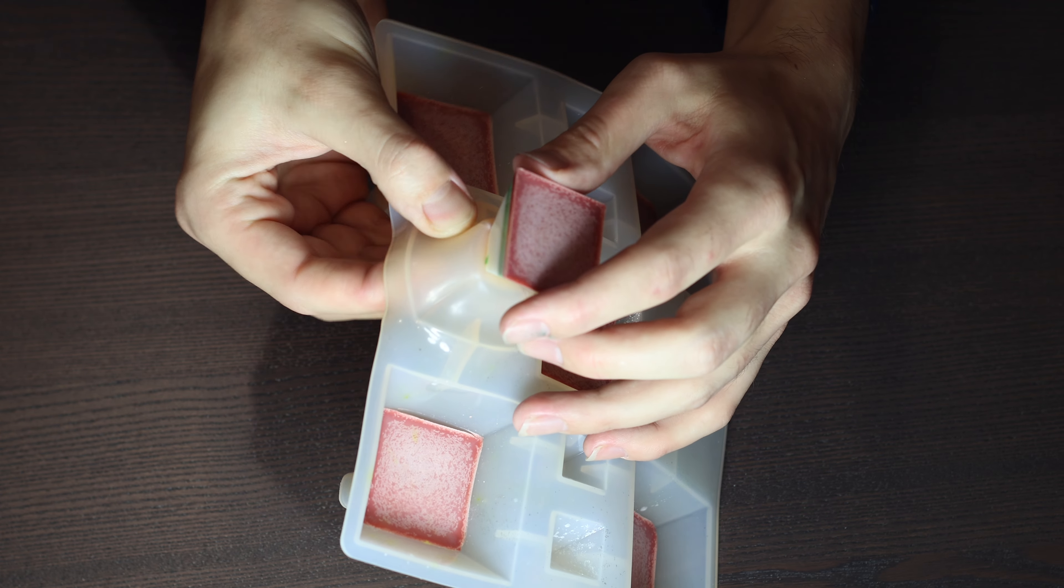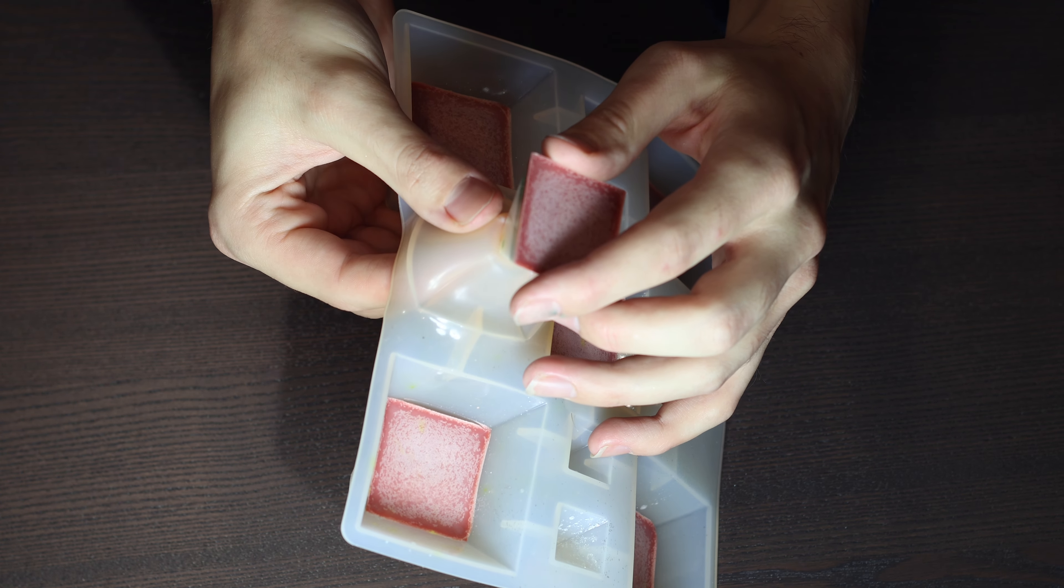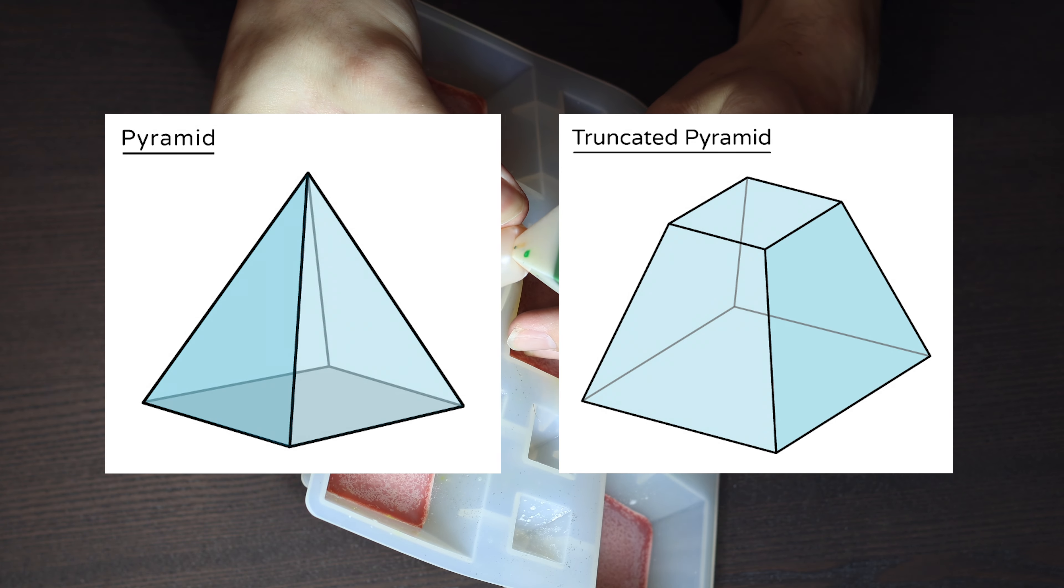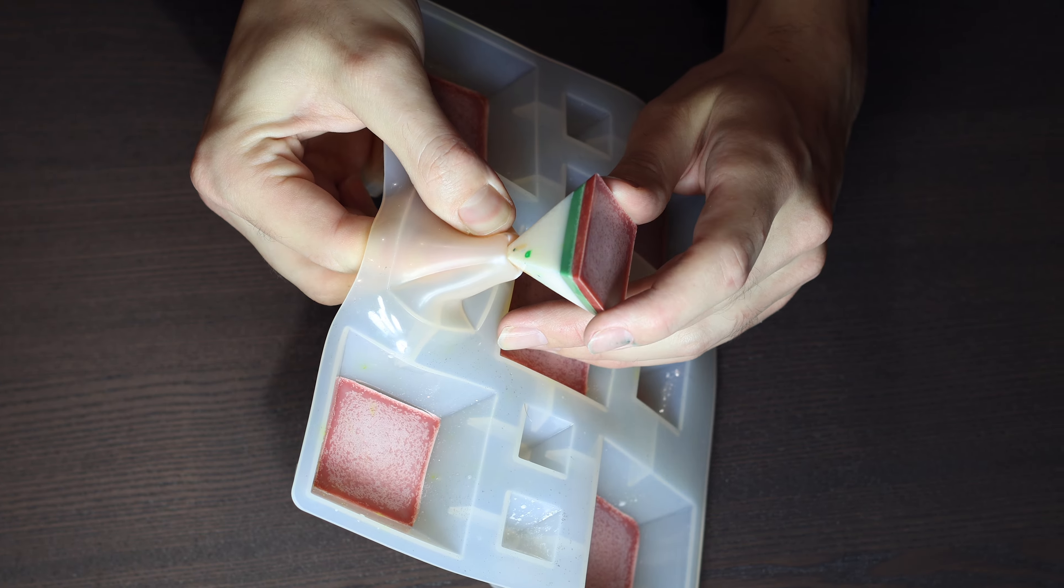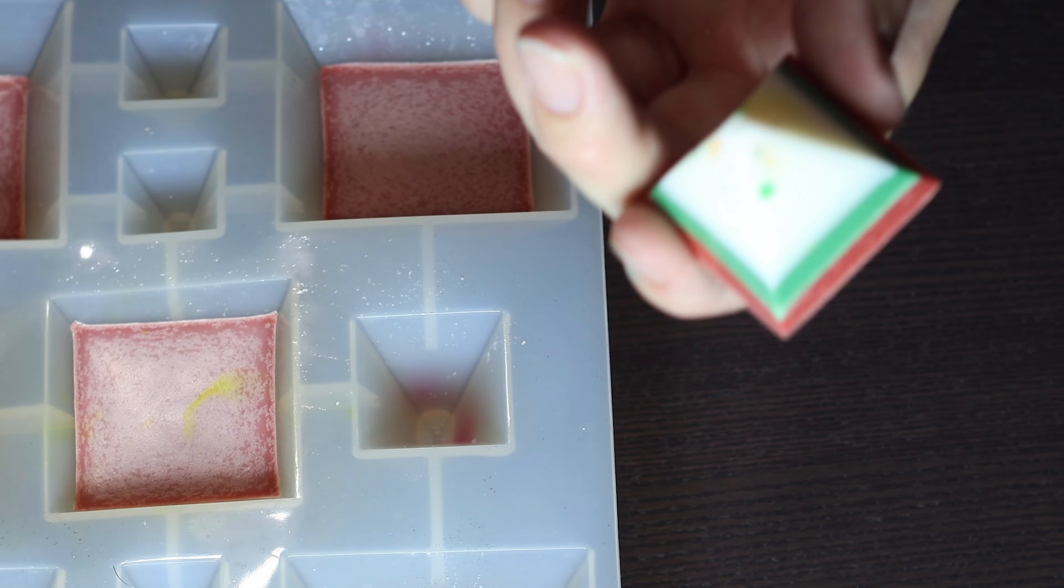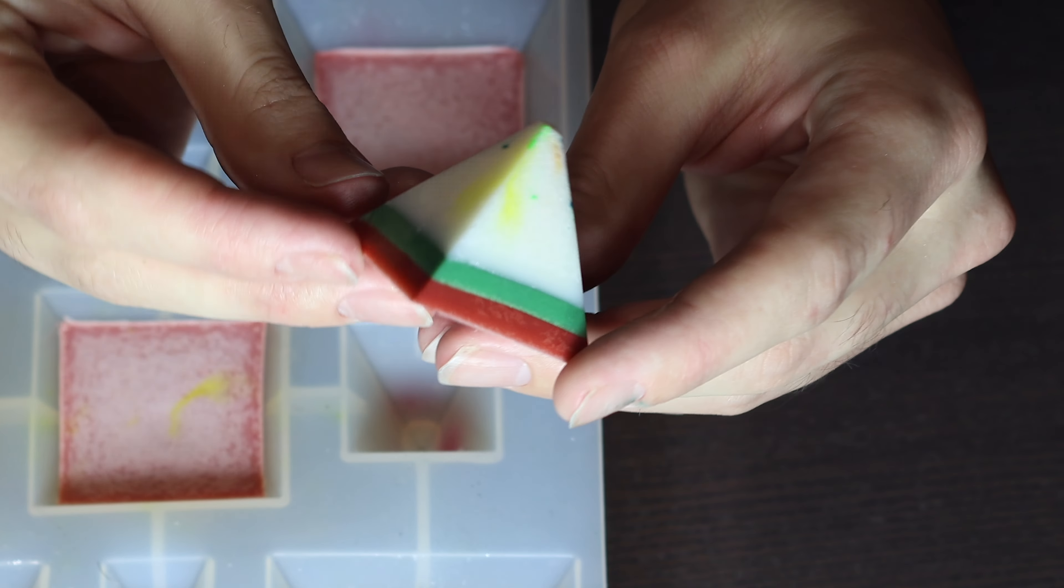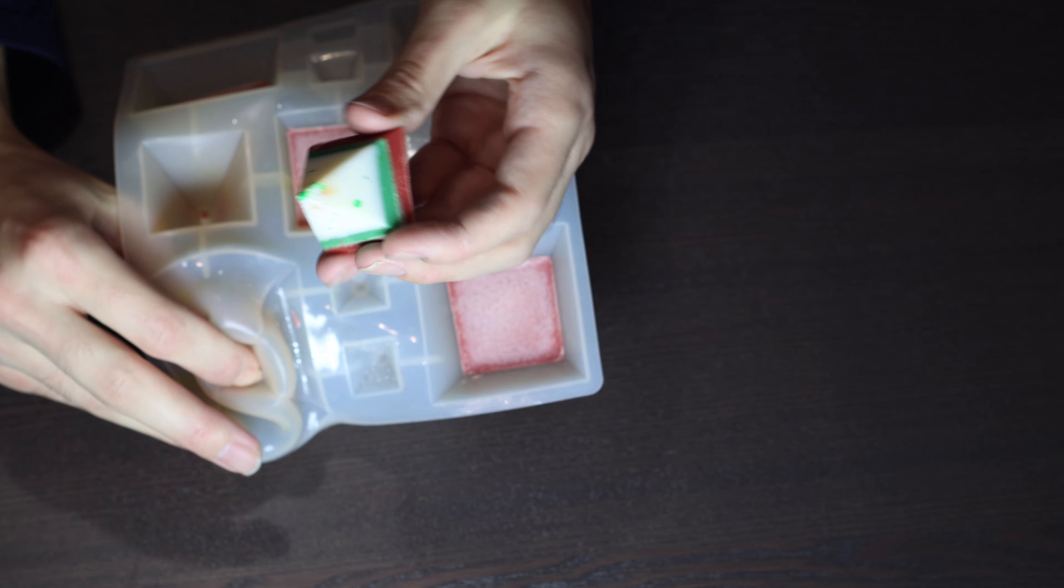While unmolding these, I have to be gentle with the tips because they break off really easily and that's a problem because instead of having pyramids, I'd have truncated pyramids and that's unacceptable. With this first one, I ended up breaking off the tip anyways precisely because I wanted to show what a truncated pyramid looks like. Now, pretty much everything about these wax melts went according to plan.